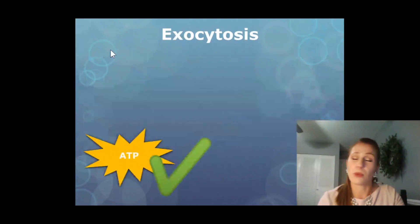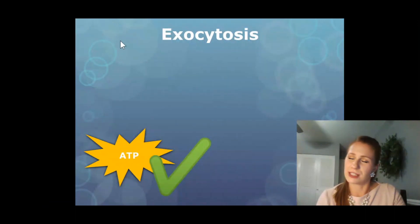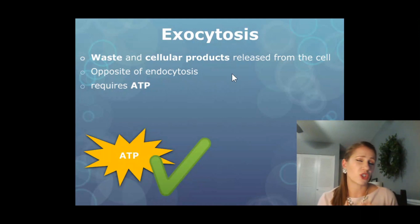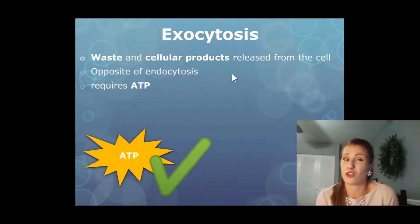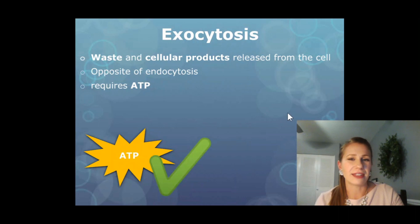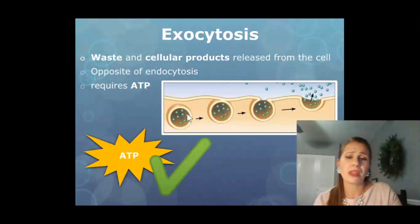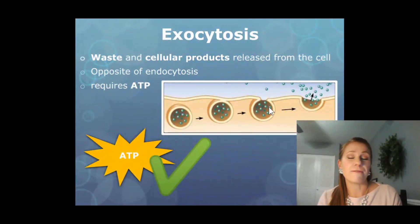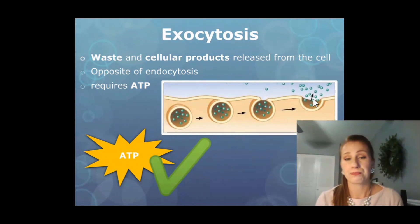The last type of active transport we're going to talk about today, which also requires ATP, is exocytosis — the opposite of endocytosis. In exocytosis, waste and cellular products get released from the cell. This is really important: if these waste products aren't removed, toxins can build up and cause the cell to not function or be destroyed. Exocytosis helps maintain homeostasis in the cell. A vesicle meets the cell membrane, fuses with it, and releases all the products inside the vesicle to the outside of the cell.